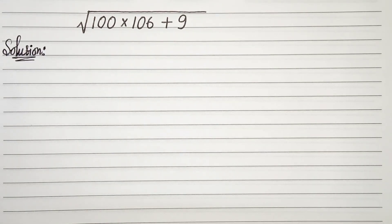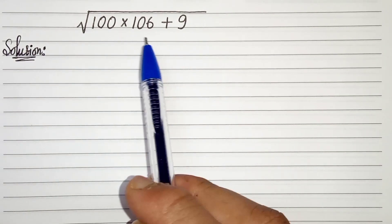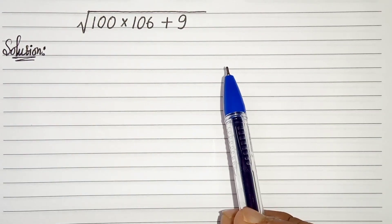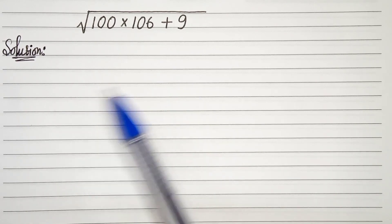In general we can just simply multiply 100 and 106, then add 9 to it, and then we can find the square root in a formal way. But in this video I'm going to show you a different approach to do that.